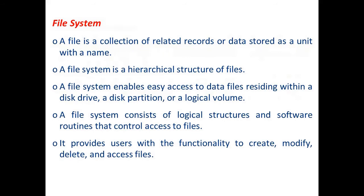A file is a collection of related records or data stored as a unit with a name. A file system is a hierarchical structure of files — a collection of files arranged hierarchically. A file system enables easy access to data files residing within a disk drive, a disk partition, or a logical volume. It allows applications to access data files stored on those devices.